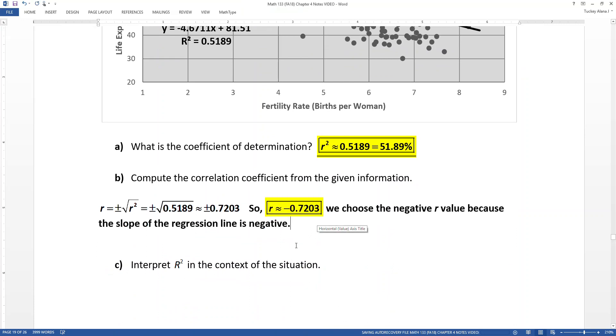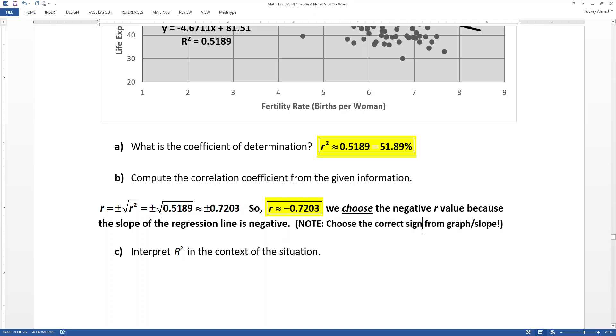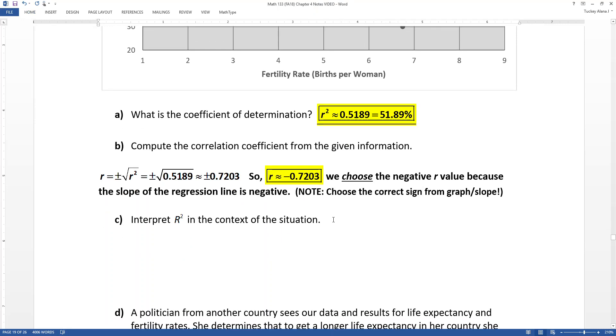And because our slope is negative, and you can see the negative relationship in the scatter plot, we are going to choose the negative value. So we choose whichever one is appropriate for our data set. It's not going to be both plus and minus. That's incorrect. But it's one or the other. And you choose the correct one based on your actual problem. So we choose the correct sign from the graph or the slope or both.